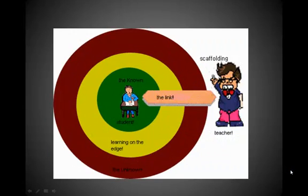The zone of proximal development, or the ZPD, is the distance between a student's ability to perform a task under adult guidance and/or peer collaboration and the student's ability solving the problem independently. According to Vygotsky, learning occurred in this zone.